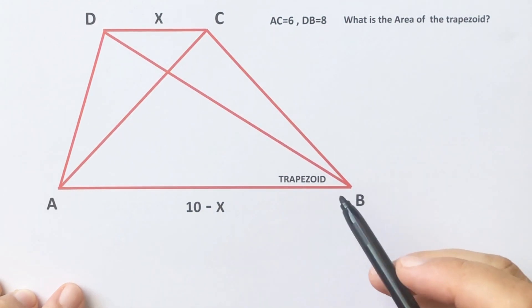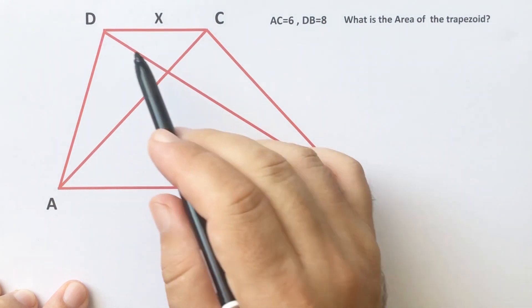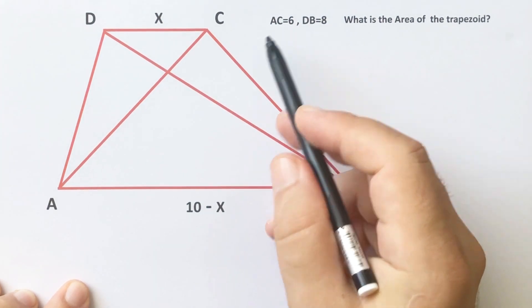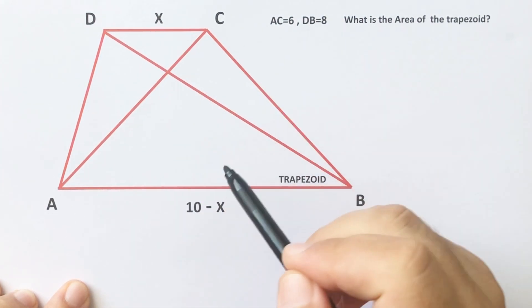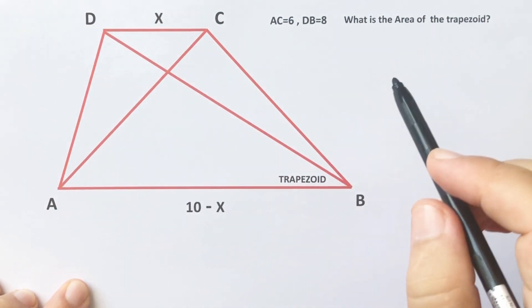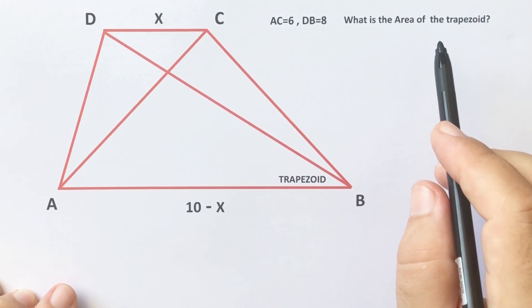Hello everyone, in this video we have one trapezoid where this length is x and this length is 10 minus x. The length of AC equals 6 units and the length of DB equals 8 units, and we need to find the area of the trapezoid.